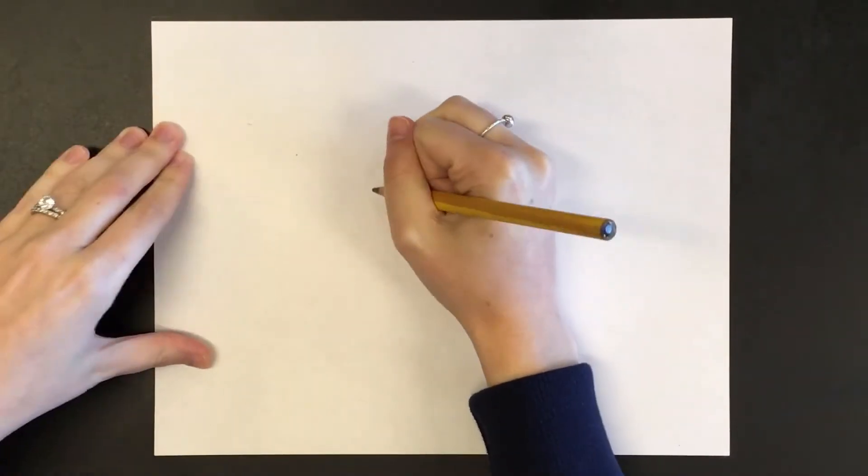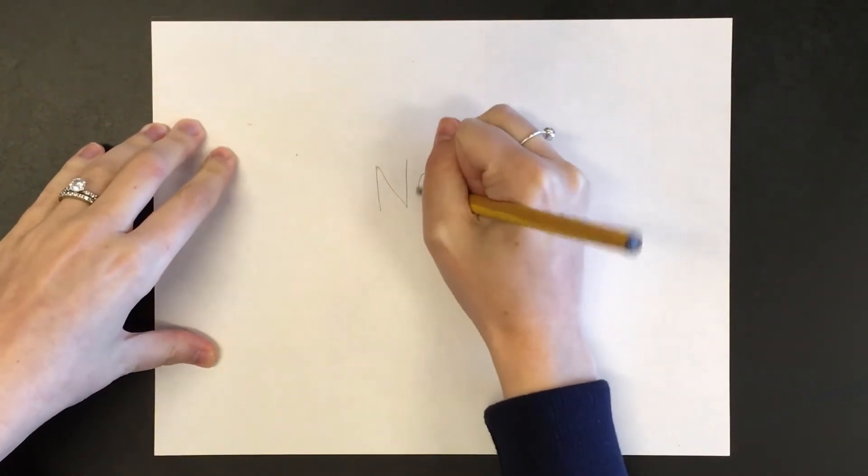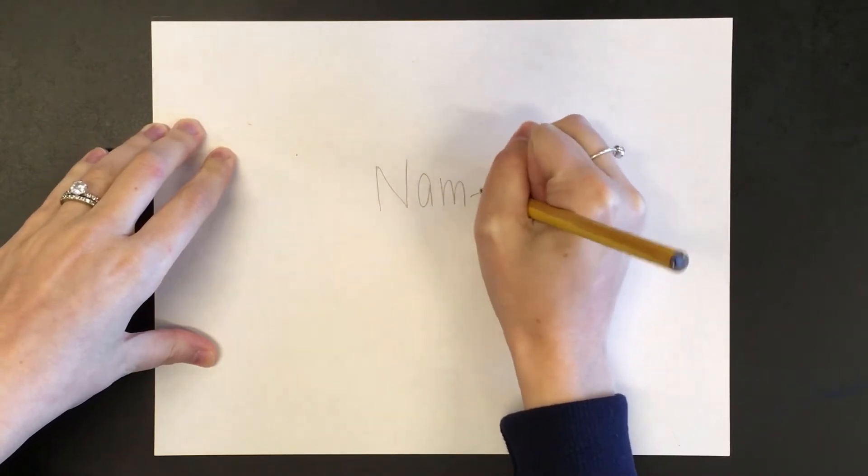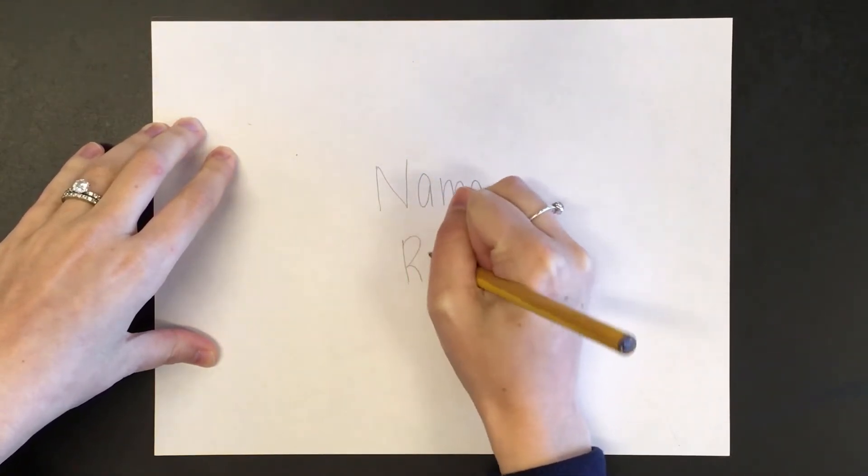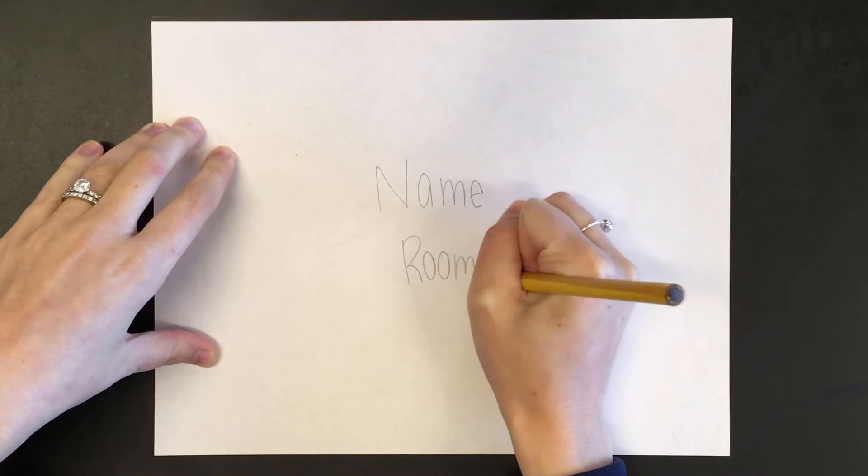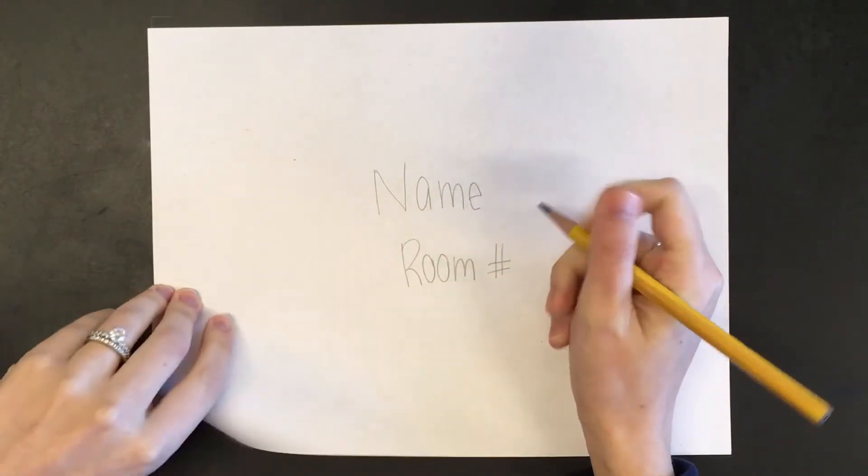The first thing you're going to do is hold your paper horizontally side to side, and you're going to write your name and your room number. After you do that, you're going to flip over your paper so that I can't see your name anymore.